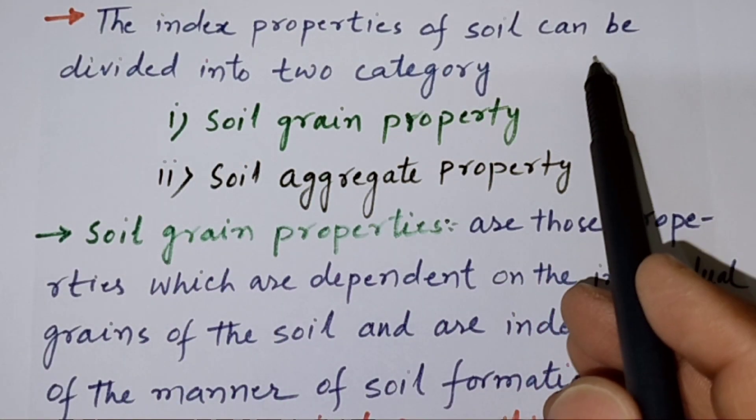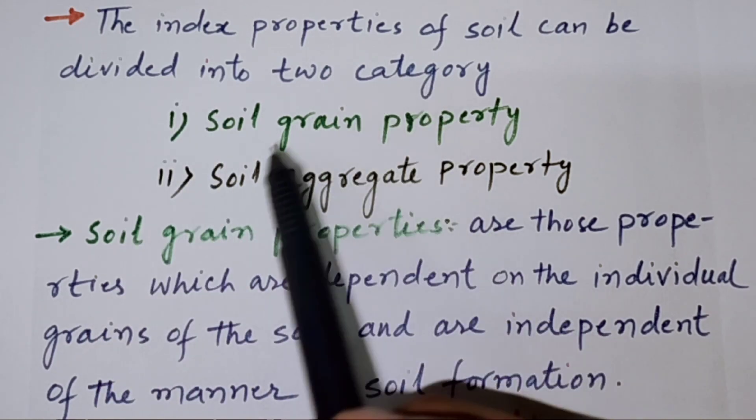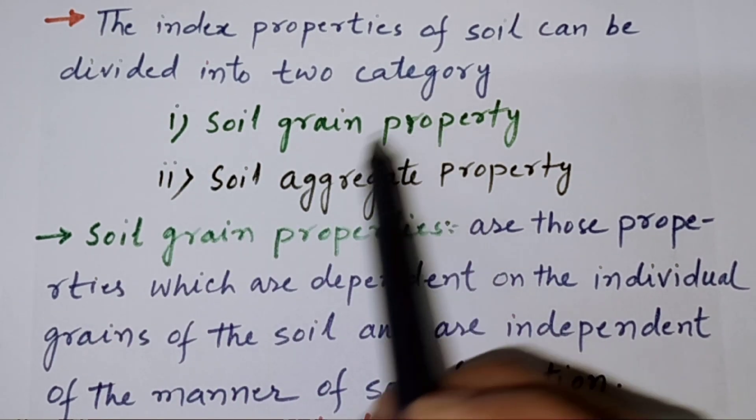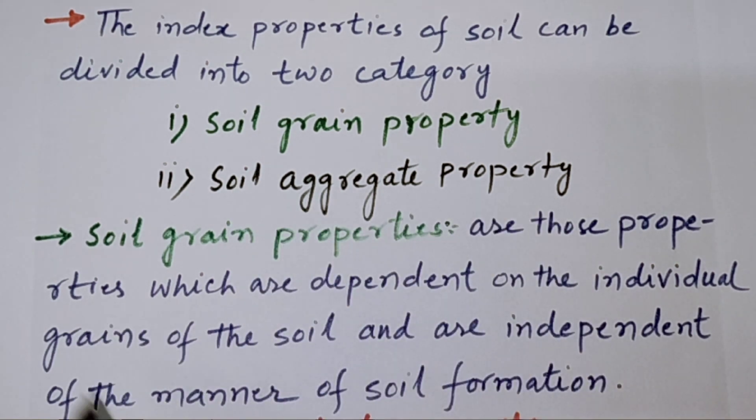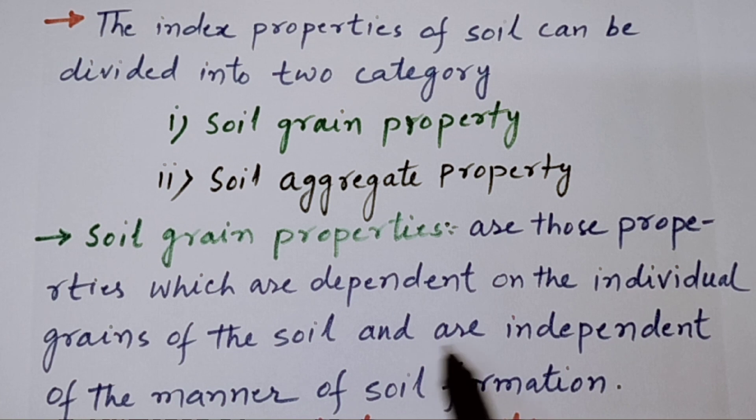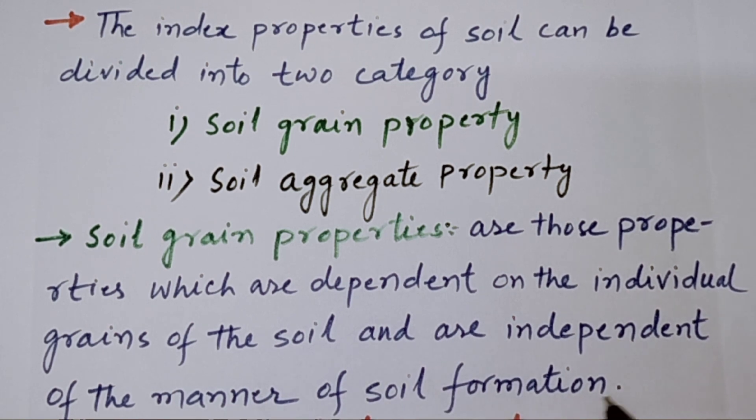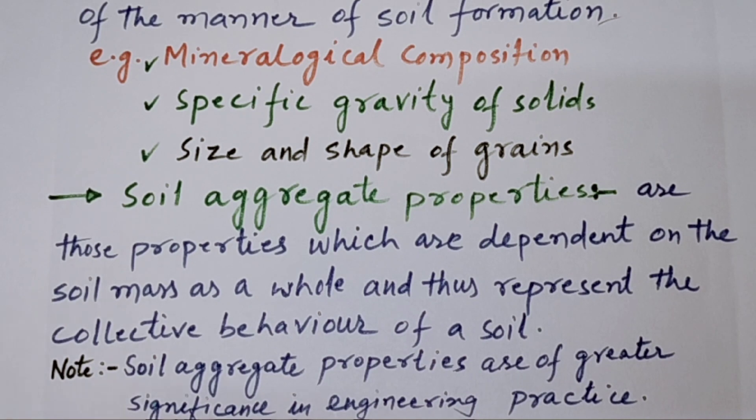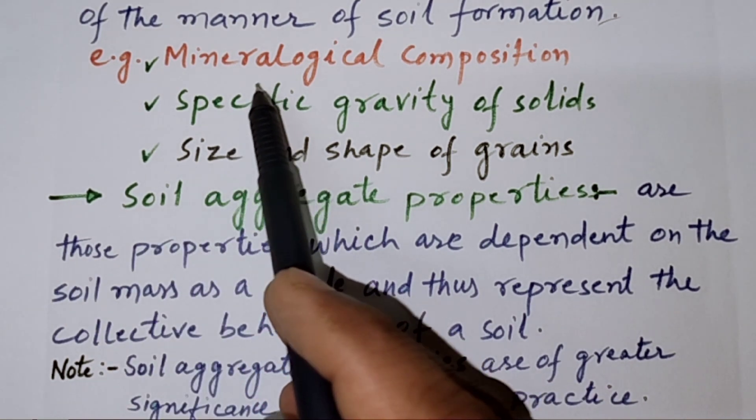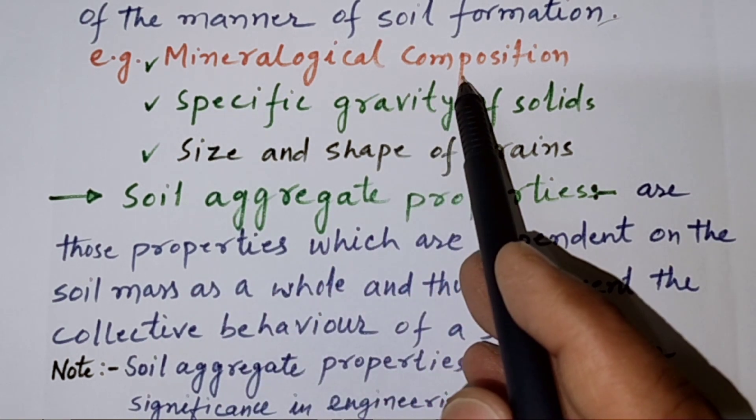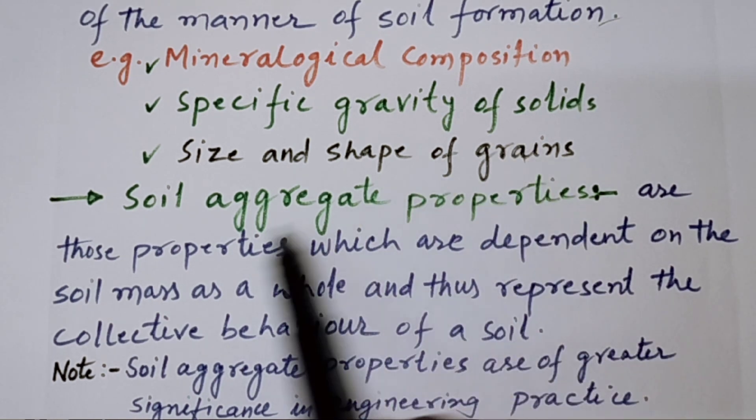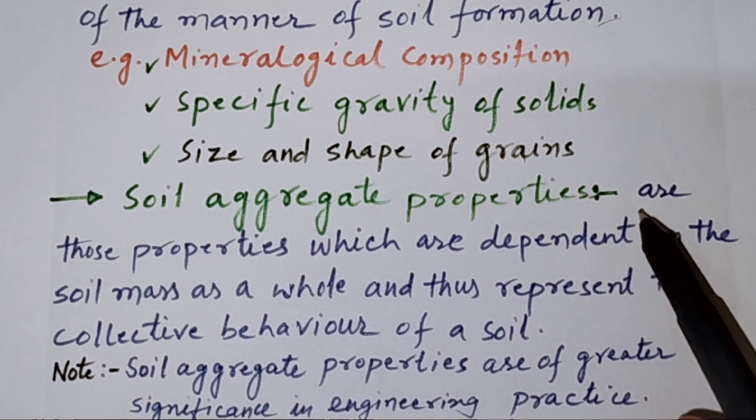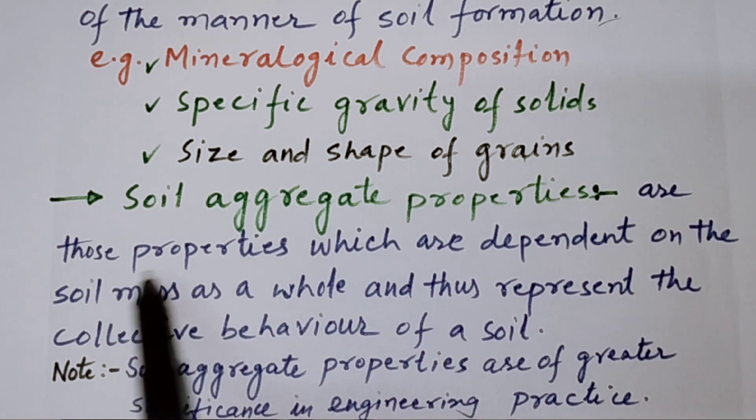The index properties of soil can be divided into two categories. Number one, soil grain property and another is soil aggregate properties. Soil grain properties are those properties which are dependent on the individual grain of the soil and are independent of the manner of soil formation. Examples of soil grain properties include mineralogical composition, specific gravity of solids, and size and shape of grains.